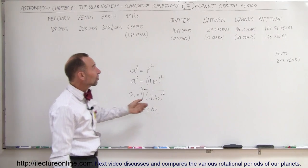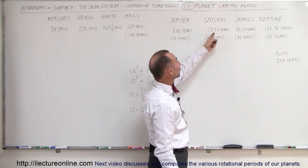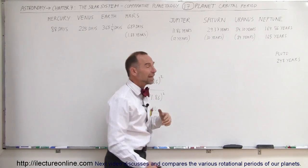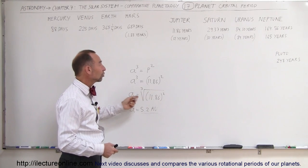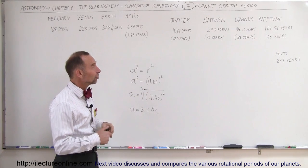When we look at Saturn, notice Saturn has an orbital period of almost 30 years, and so the average distance, if we plug in 29.37, we square that, we take the cube root, we get the average distance of Saturn and so forth.